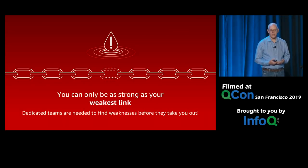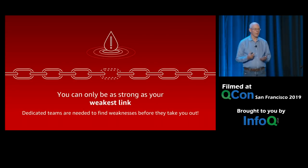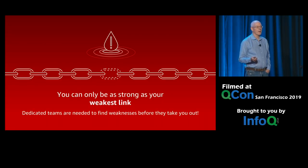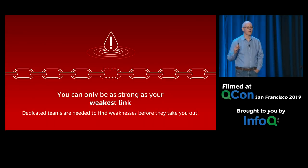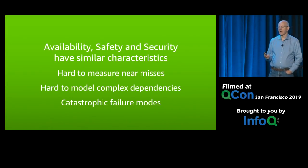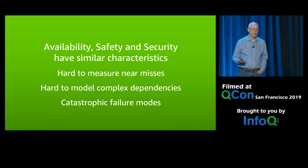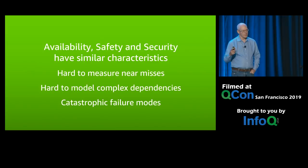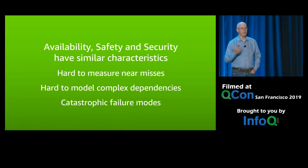Here's the real problem: you can only be as strong as your weakest link. Whether it's security or availability, that one chink in your armor is the thing that will break. The only way you can find that chink is by having somebody test every link to find where the weaknesses are. And this really doesn't just apply to availability — it applies to safety and security. They all have similar characteristics: hard-to-measure near misses, complex dependencies that are hard to model, and catastrophic failure modes. When it goes wrong, it really goes wrong.